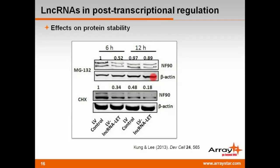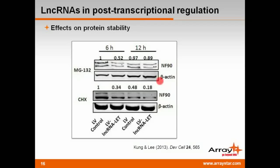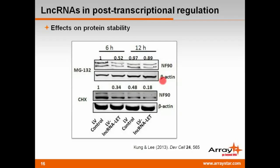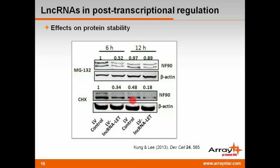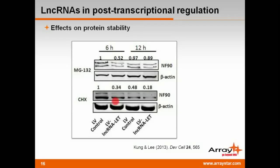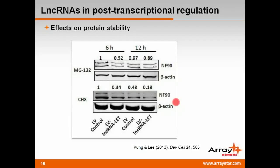LNCRNAs are also known to affect genes post-transcriptionally. Shu Han Sun's lab demonstrated this for LNCRNA-LET, an LNCRNA that inhibits hypoxia-induced tumor metastasis. The protein NF90, which physically interacts with LNCRNA-LET, is stable in the presence of the proteasome inhibitor MG132. However, NF90 levels are decreased in the presence of the protein synthesis inhibitor cycloheximide. These results indicate that the normal cellular function of LNCRNA-LET is to reduce NF90 expression by promoting its ubiquitin-mediated degradation, which is a novel mechanism of LNCRNA function.